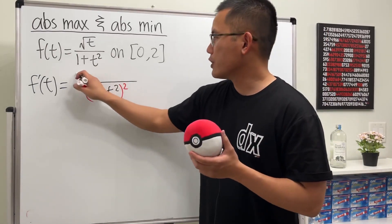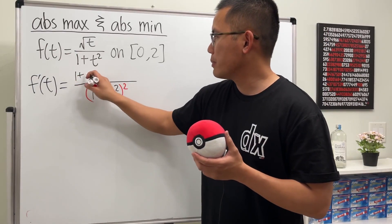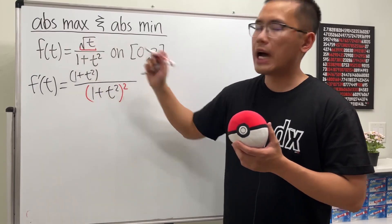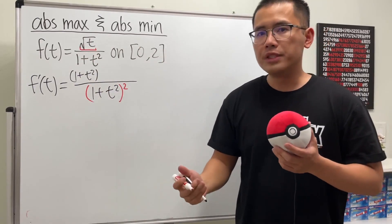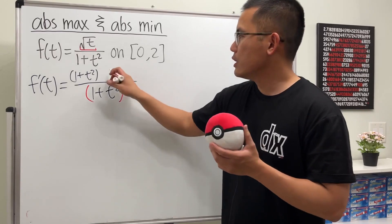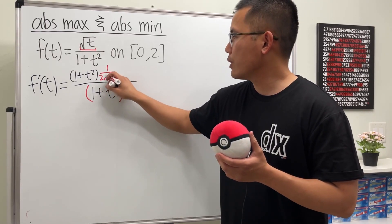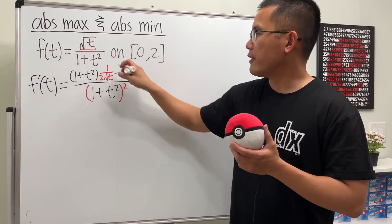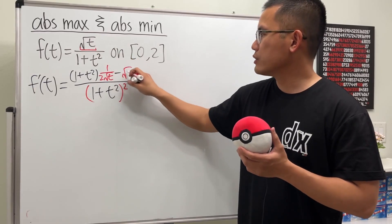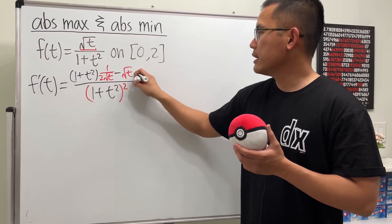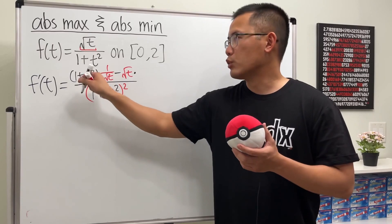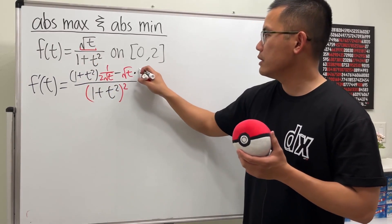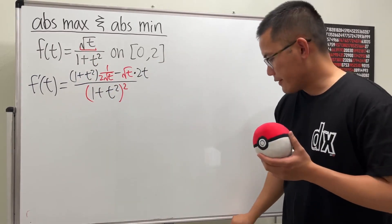We keep the bottom function, which is 1 plus t squared, and multiply by the derivative of the top. The derivative of square root of t is 1 over 2 square root of t. Then we minus the top function, which is square root of t, and multiply by the derivative of the bottom. The derivative of 1 is 0, and the derivative of t squared is 2t.